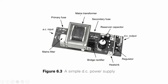This is the structure of a simple DC power supply showing the entire block diagram. The AC input passes through a primary fuse into the step-down transformer, followed by a secondary fuse. Then comes the bridge rectifier circuit, followed by a reservoir capacitor filter. The last stage is the voltage regulator, and the final output is a regulated DC output voltage.